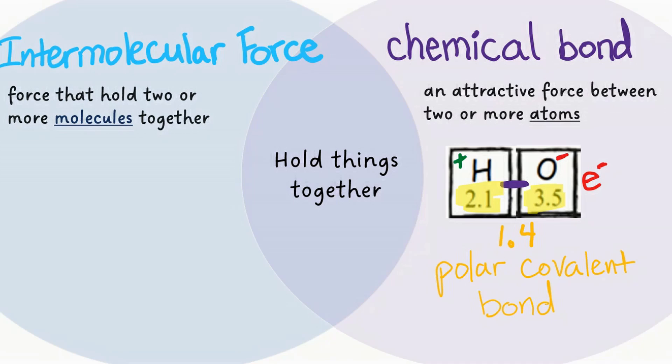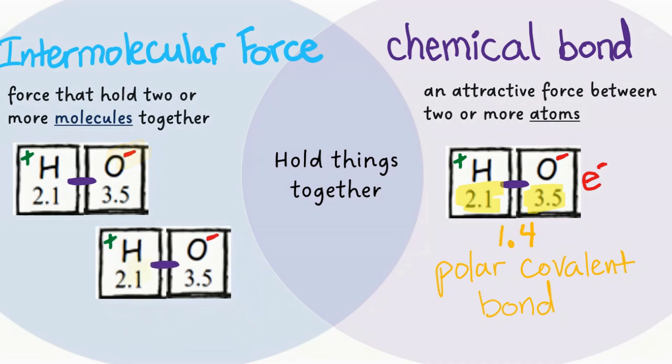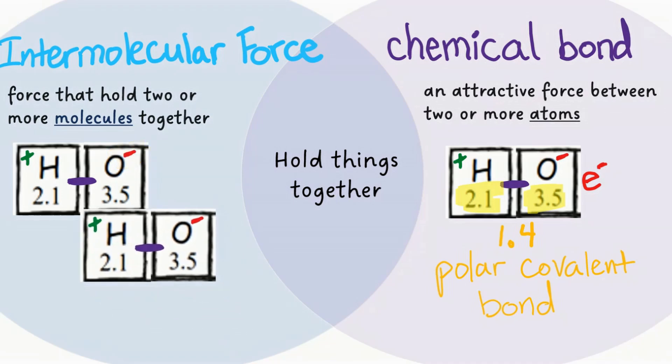So now let's say several of these hydrogen oxygen molecules are floating around. The partial negative charge of the oxygen side of one molecule will attract the partial positive charge of the hydrogen side of the other hydrogen oxygen molecule. This is our intermolecular force formed between the two molecules.